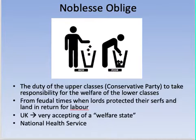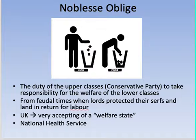The UK follows what is known as noblesse oblige — the duty of the wealthy or upper class to take care of the lower class, similar to social welfare. The upper class is sometimes associated with the conservative party. This comes from feudal times where lords would protect the serfs working on their land.